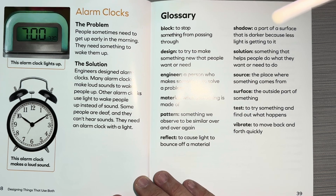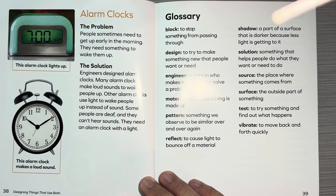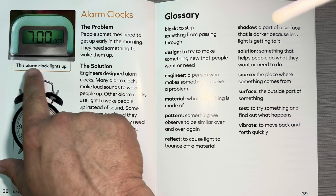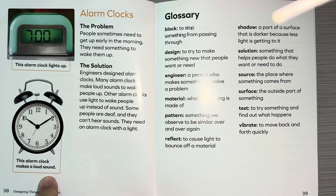Alarm clocks. The problem: people sometimes need to get up early in the morning, and they need something to wake them up. Engineers designed alarm clocks. Many alarm clocks make loud sounds to wake people up. Other alarm clocks use light to wake people up instead of sound. Some people are deaf and they can't hear sounds — they need an alarm clock with a light. This alarm clock lights up. This alarm clock makes a loud sound.